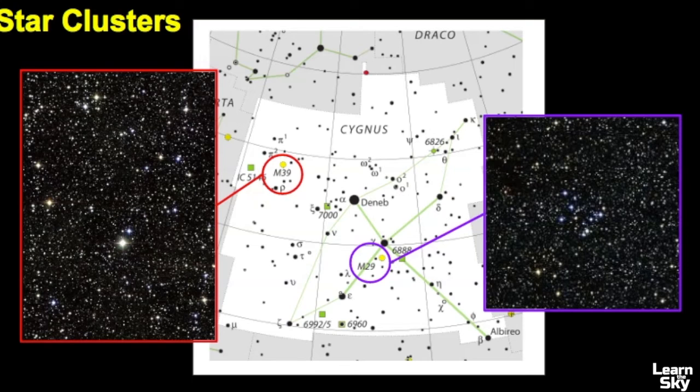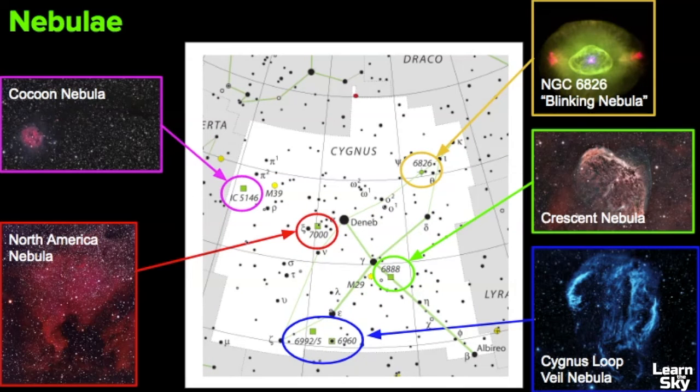The two star clusters that are worth trying to look for are M39 and M29. Both of these are open star clusters. There's quite a few nebulae and these are just a few of them, but we have the Cocoon Nebula, North America Nebula, the Blinking Nebula, the Crescent Nebula, and this right here is one of my favorite objects to study called the Cygnus Loop, sometimes called the Veil Nebula.